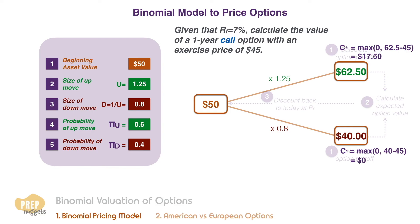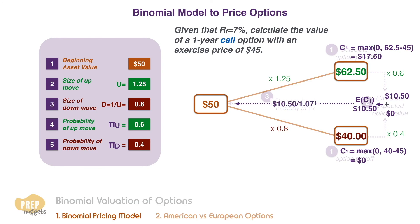The second step is to calculate the expected option value one year from now using the pseudo-probabilities. By multiplying the payoffs with their respective probabilities we get an expected value of $10.50. The last step is to simply discount back this value to its present value using the risk-free rate. The call option is valued at $9.81 using this binomial pricing approach.